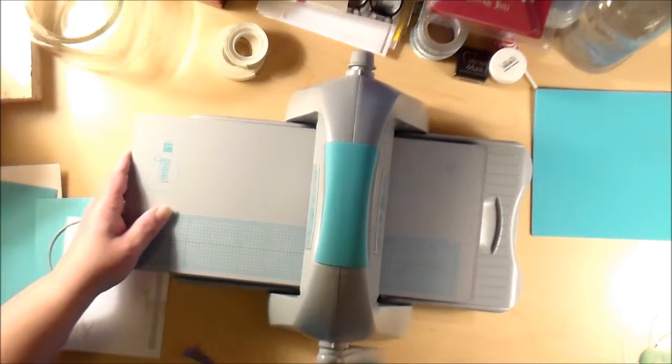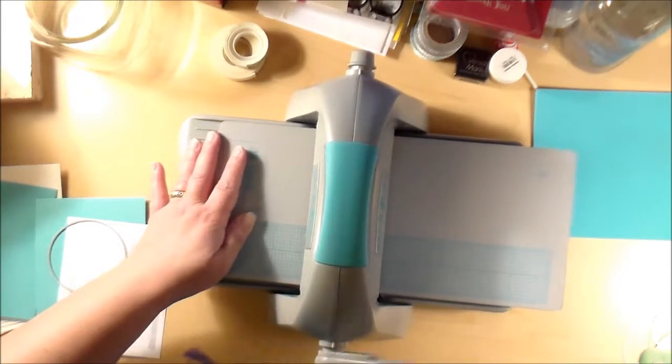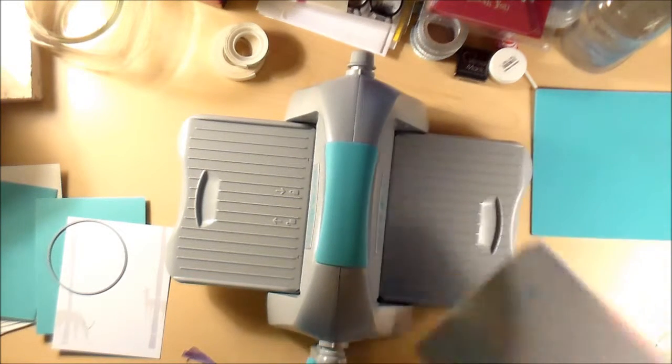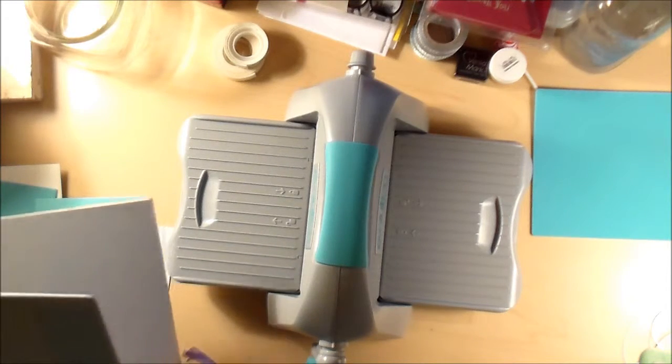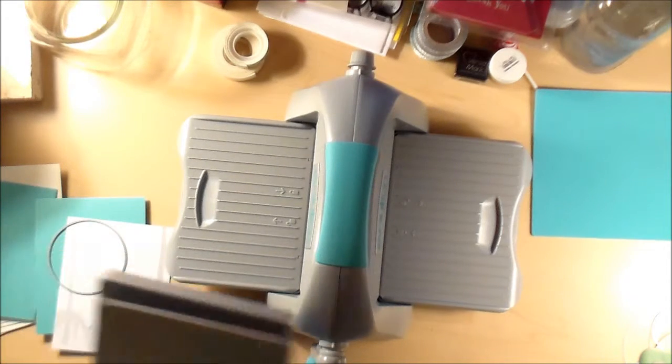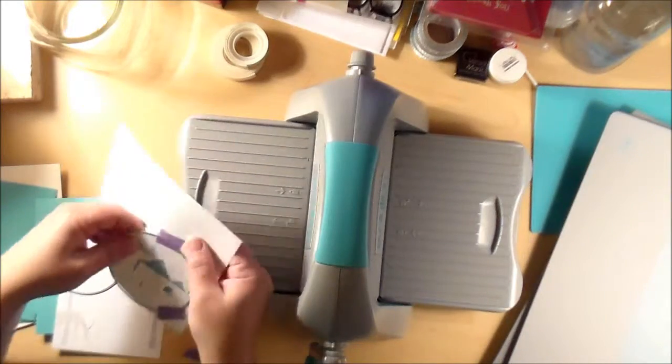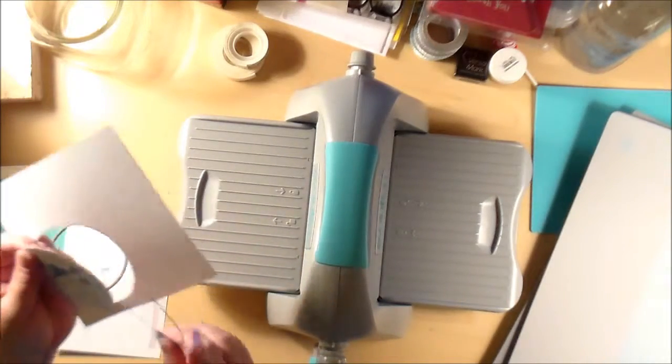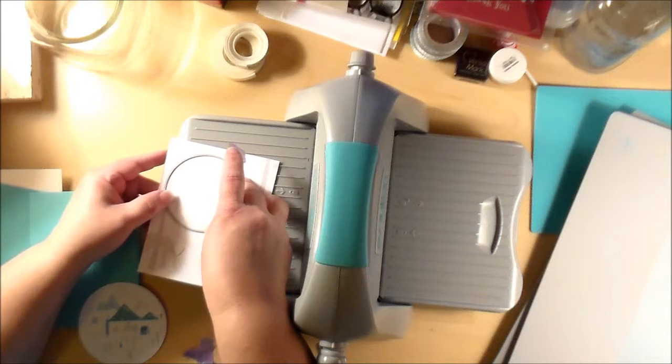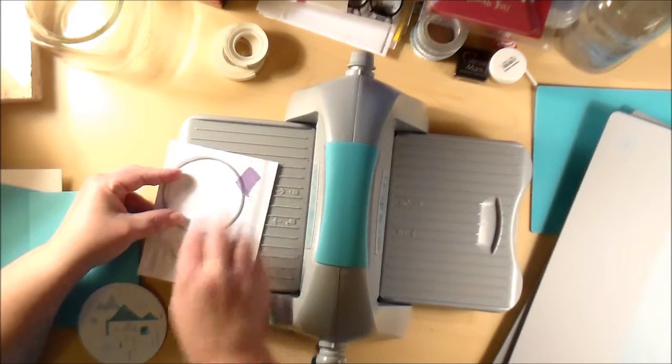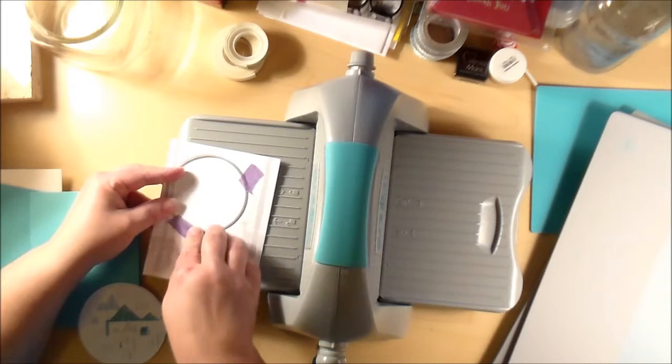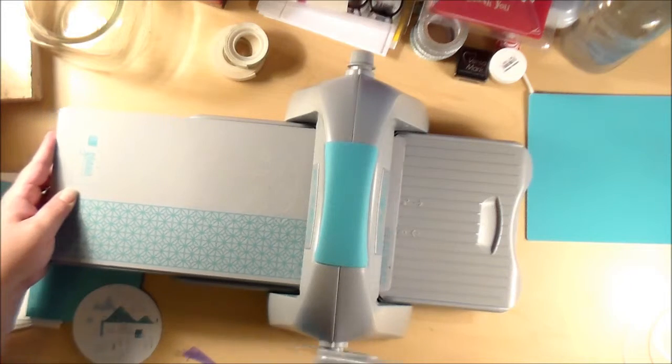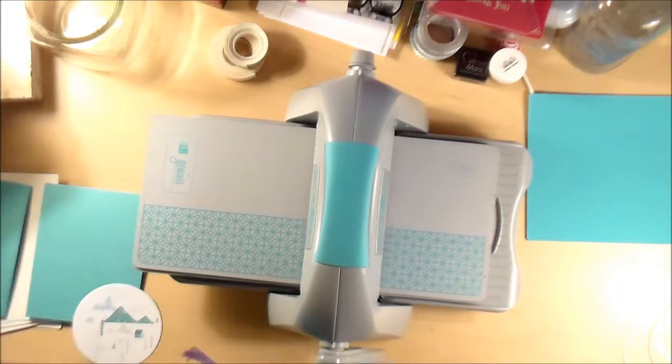I put it between my two plates and cranked it on through. I really do like this machine, it's so nice to only have to worry about two plates and not a whole bunch of different sandwich plates. It came out beautiful, as always. Then using the smaller die, I figured out where I wanted the window for the shaker card to be on the front piece of decorative paper and ran it through the evolution.